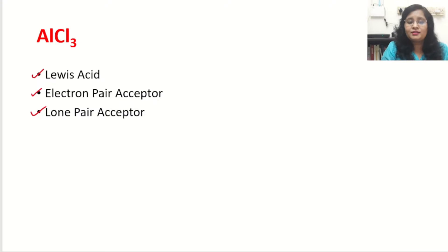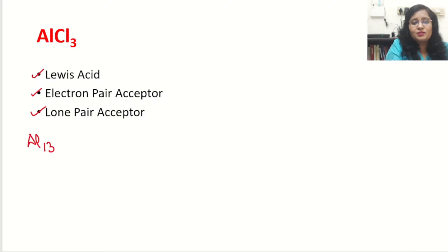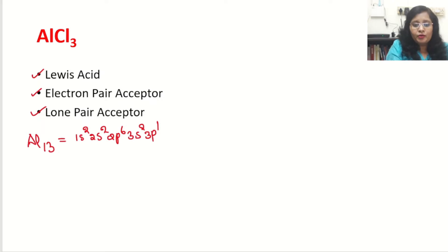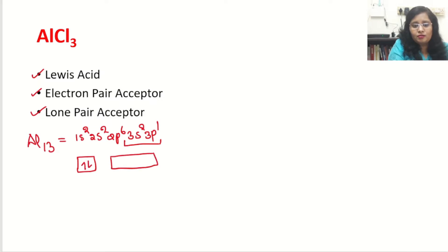The answer to why these names are given to aluminium trichloride is hidden in the configuration of the aluminium and chlorine atoms. Aluminium has 13 electrons, so the electronic configuration is 1s² 2s² 2p⁶ 3s² 3p¹. The valence shell is 3s² and 3p¹. If we draw it here, 3s is having two electrons and 3p is having only one electron. So there are three electrons in the valence shell of aluminium.